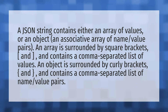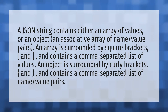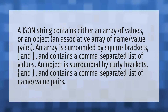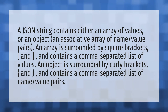A JSON string contains either an array of values, or an object — an associative array of name-value pairs. An array is surrounded by square brackets and contains a comma-separated list of values.